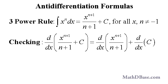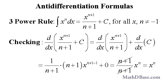Checking the power rule: the derivative of x to the n plus 1 over n plus 1 plus c can be written as the sum of two separate derivatives. For the first, the derivative of x to the n plus 1 over n plus 1: the exponent n plus 1 cancels with the n plus 1 in the denominator, and the exponent of x is then reduced by 1. The derivative of the constant c is just 0, which leaves x to the n.